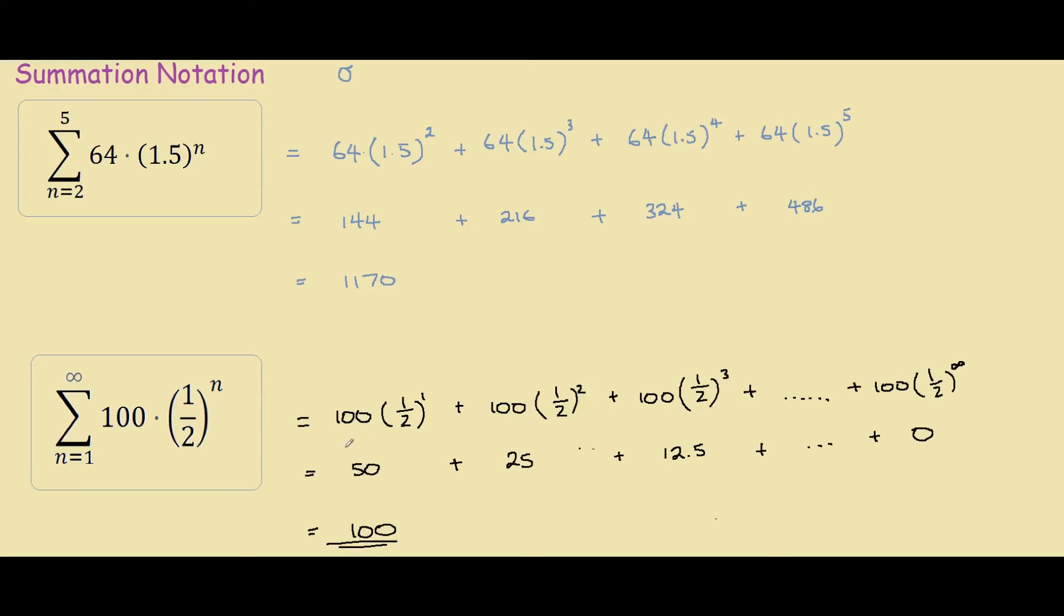Because if you think about it, the first term is 50, but every single other term on the right-hand side will eventually add up to 50. If you keep adding halves of the previous number until you reach 0, this equals 50.